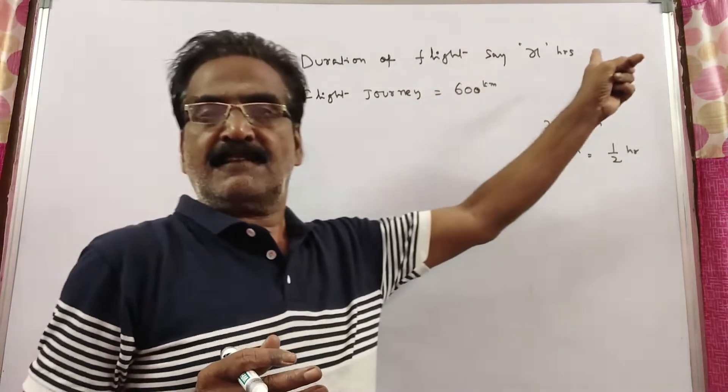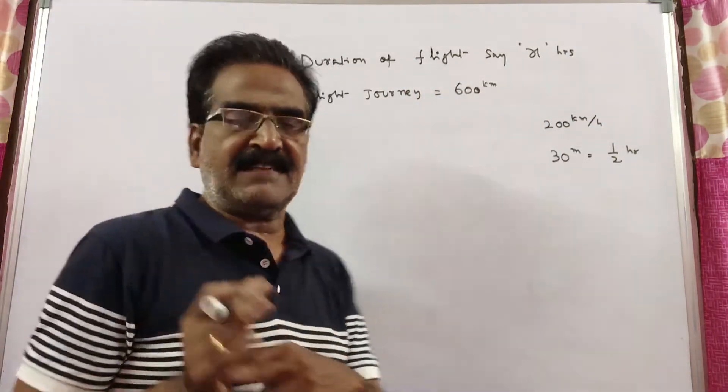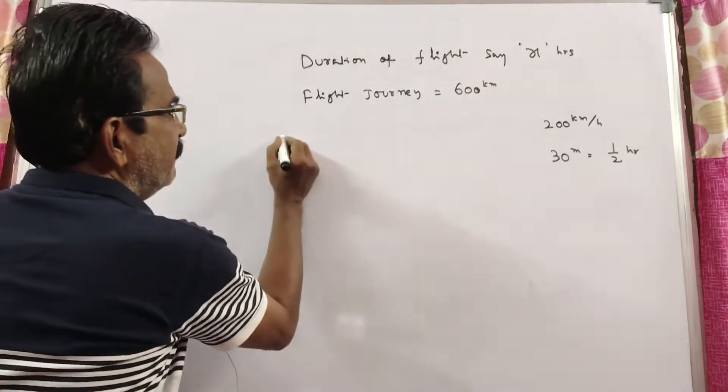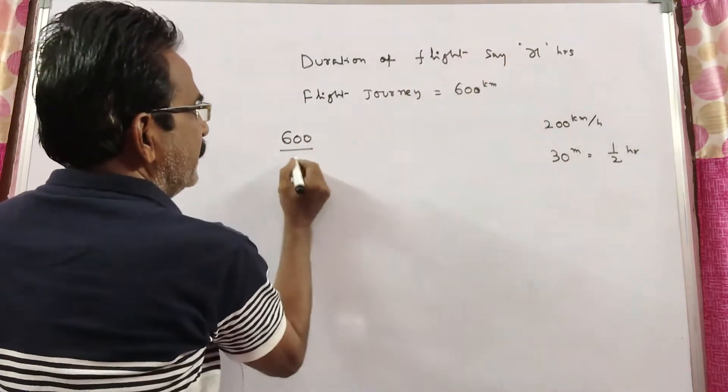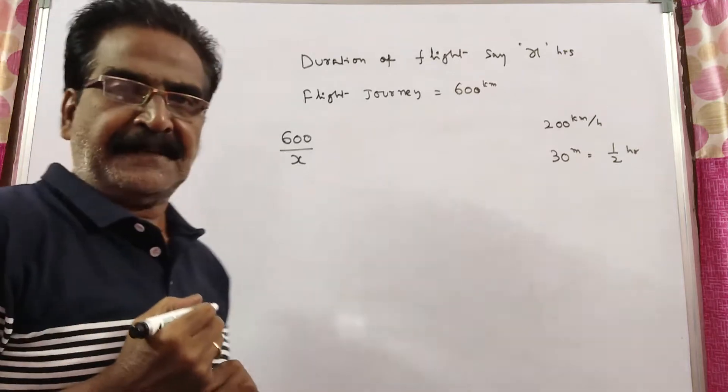Say the actual duration of the flight is X hours. Then the original speed equals distance by time. This is the original speed.